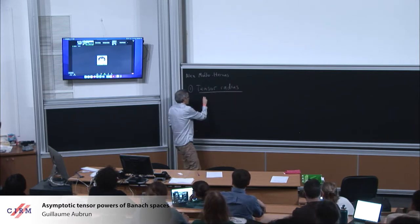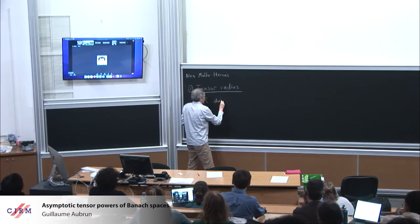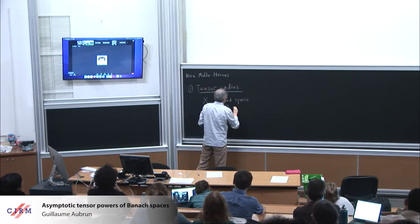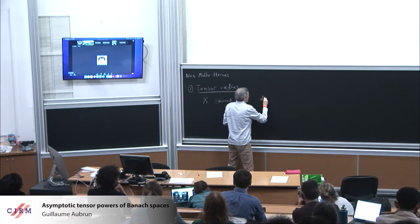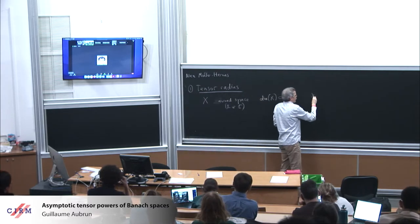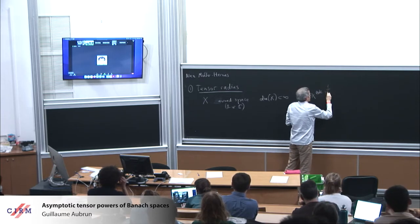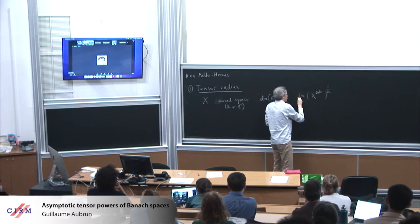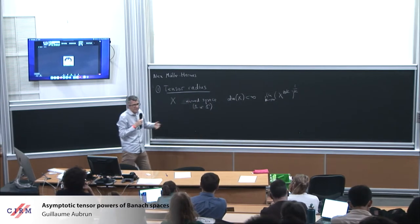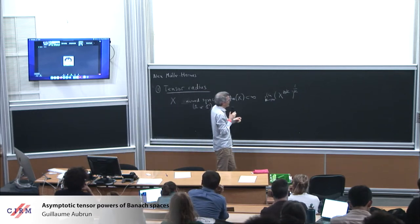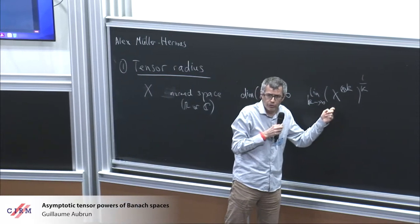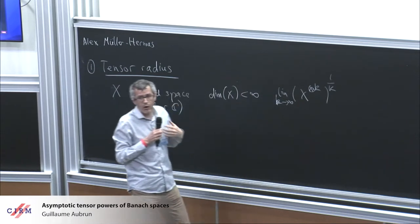The tensor radius is defined for a normed space, always in finite dimension — either over the reals or complex field. We look at X's k-th tensor power, take the k-th root, and take the limit as k tends to infinity. Of course I have to explain what this means. X tensor k is the algebraic tensor product, and when you have a norm on X there are several norms you can put on the tensor product, and this somehow quantifies how different they may be.